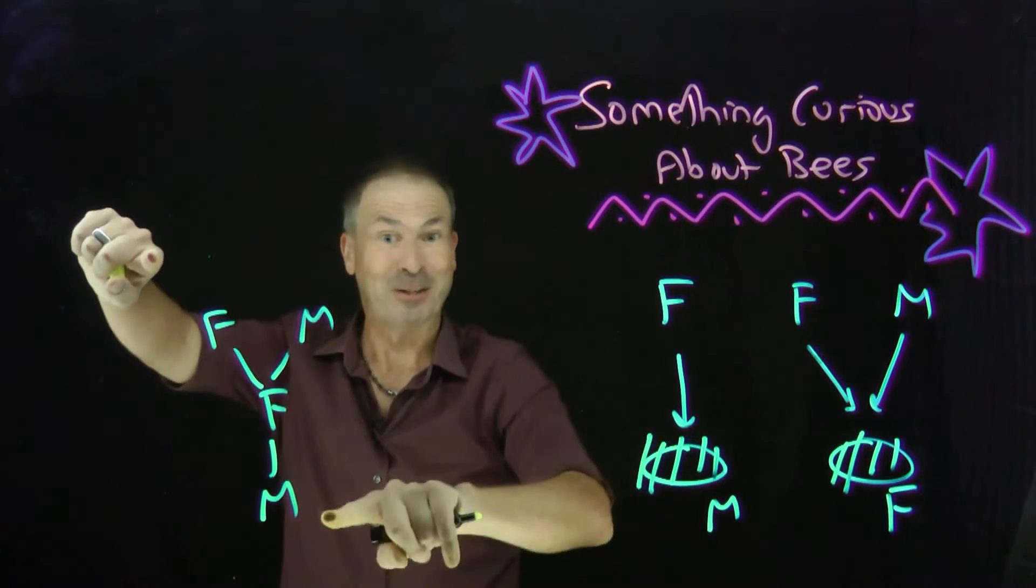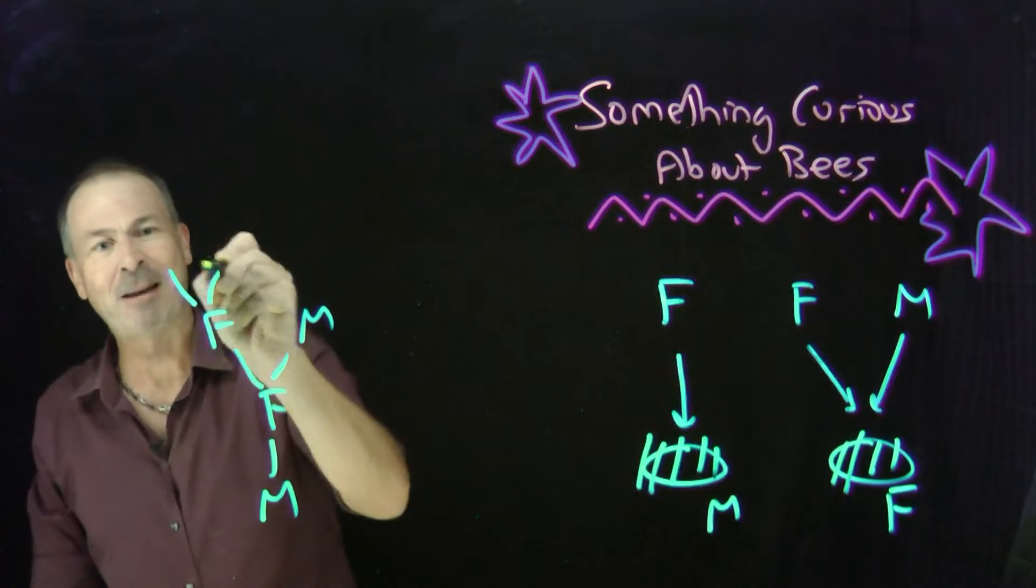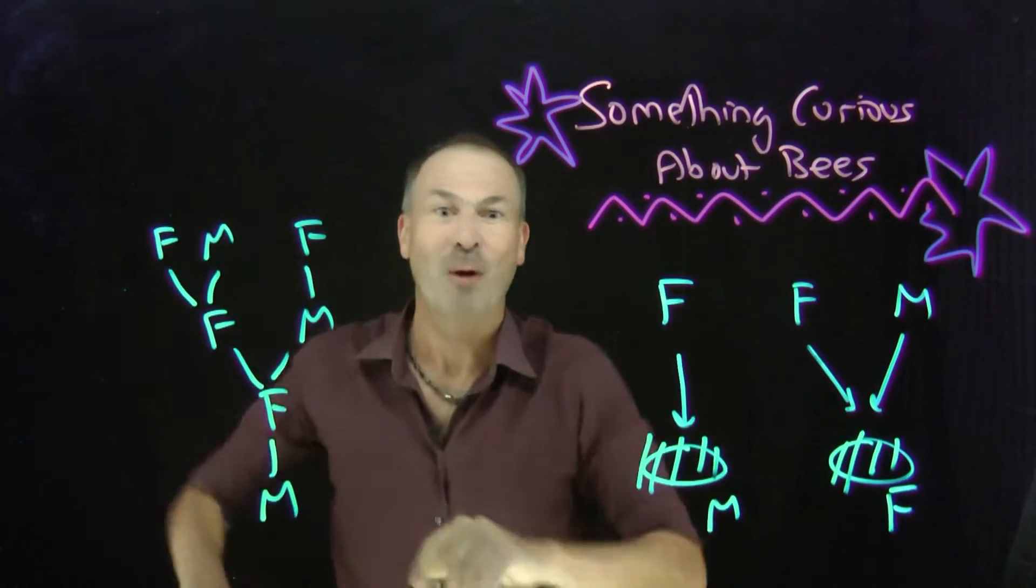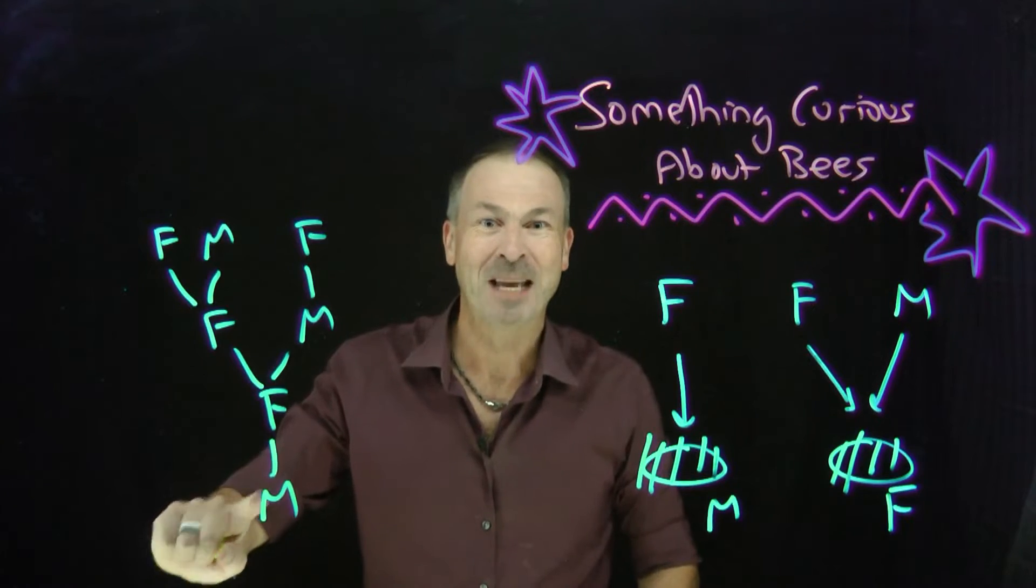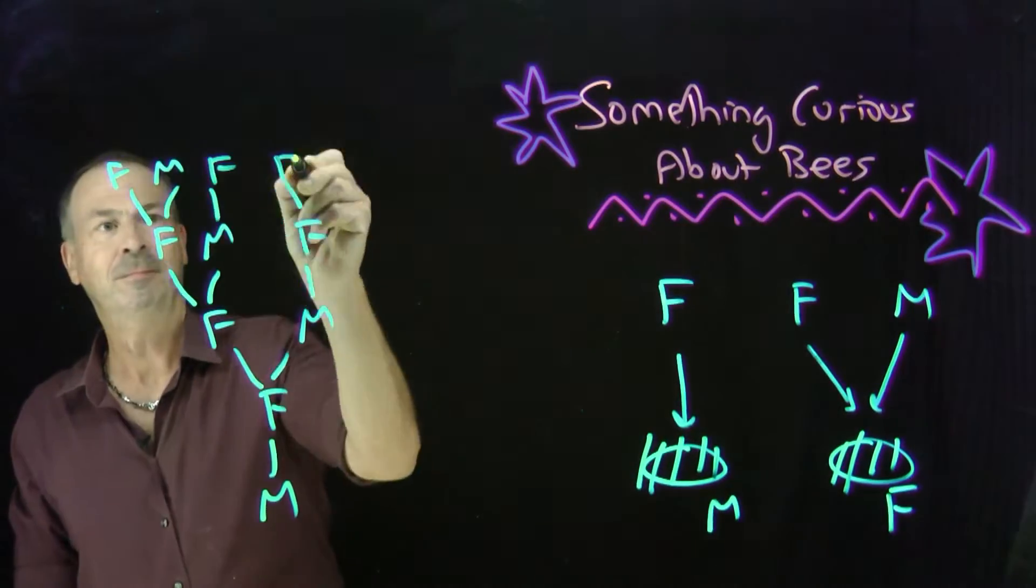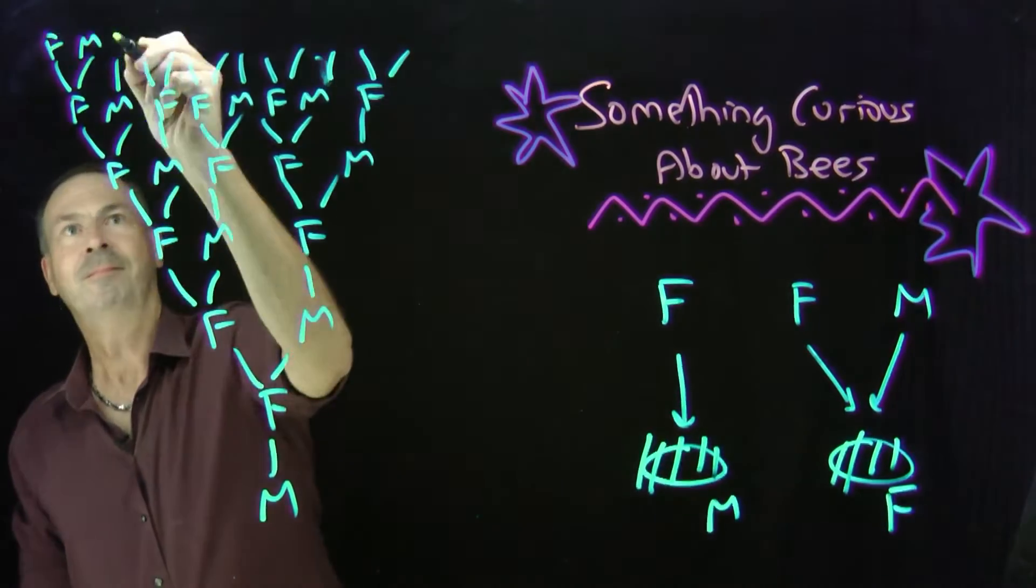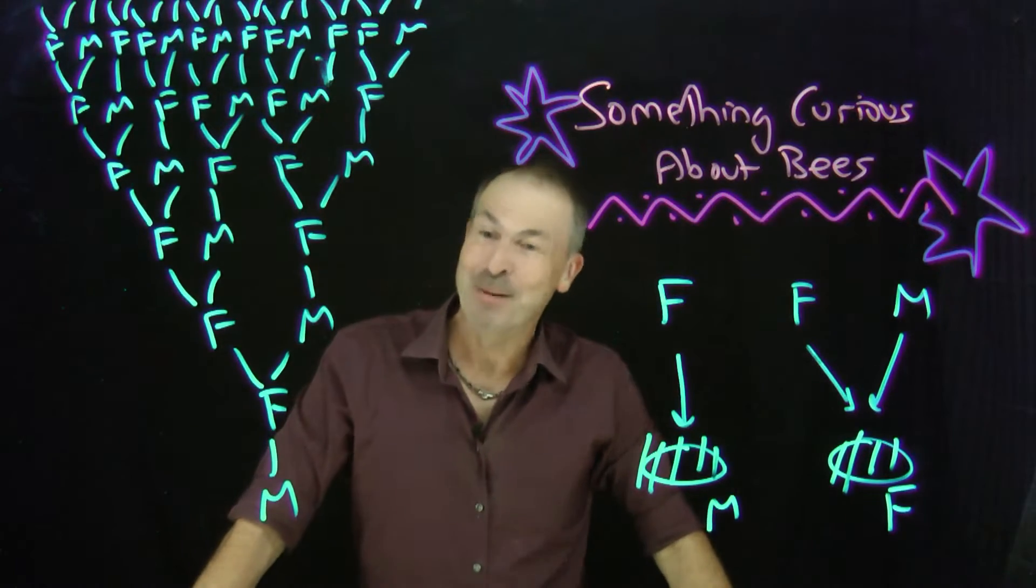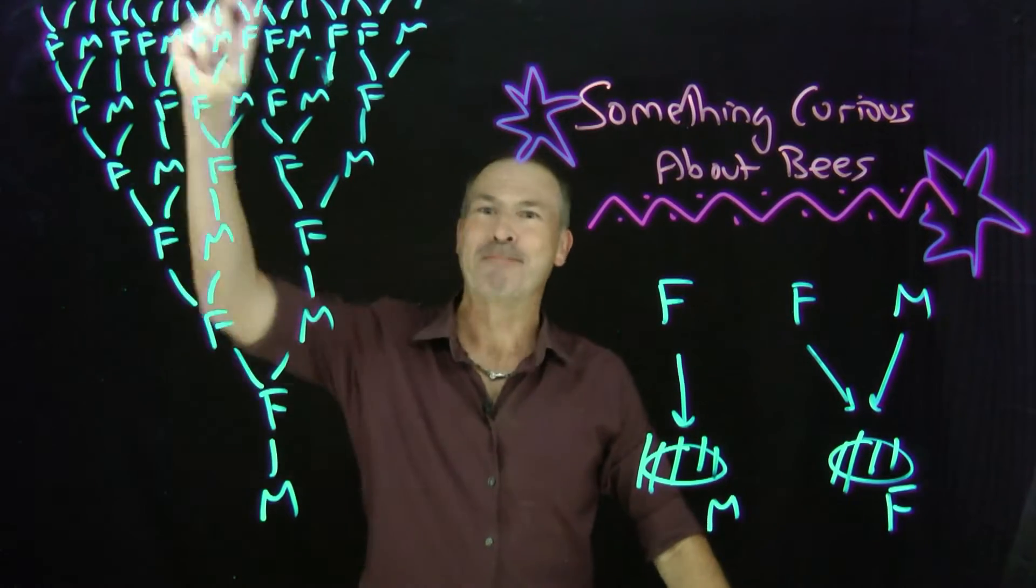Let's go back to the great grandparents of that bee down there. Well, this female here has two parents, this male here has one parent. So there's three great grandparents of our original male. In fact, let me keep drawing that family tree of that male down there. Watch me. There it is. There's the family tree of a single bee going back many, many generations.